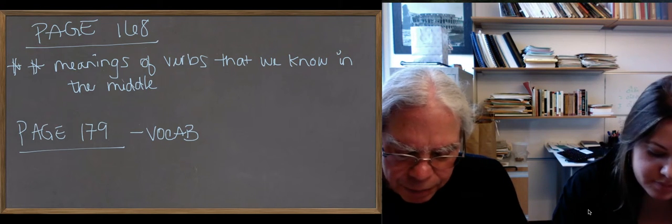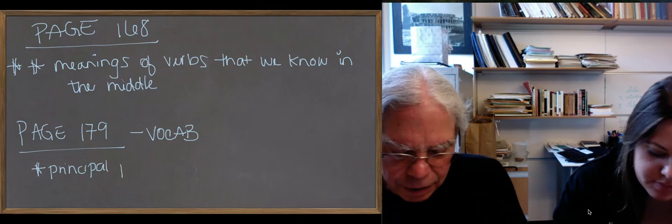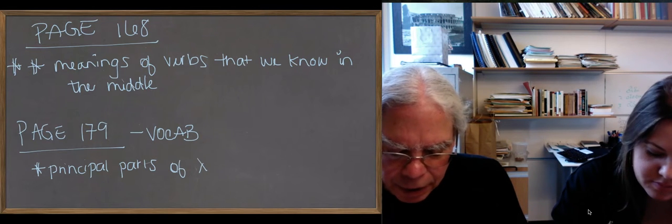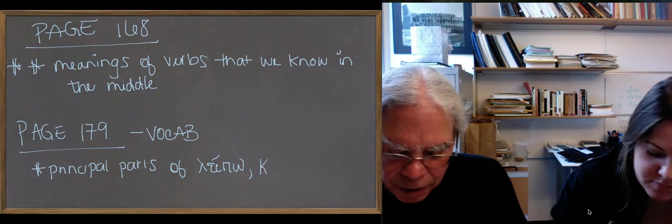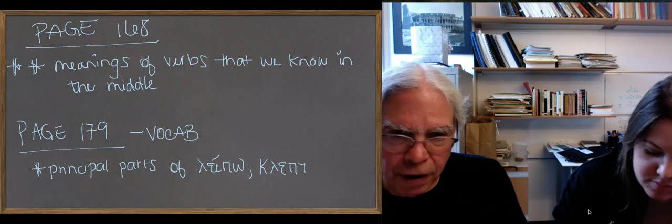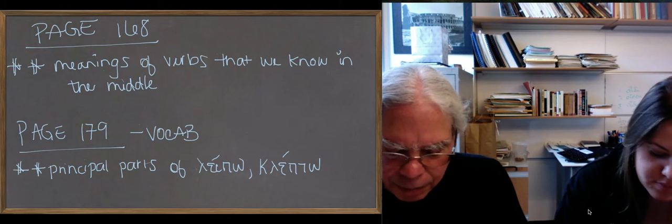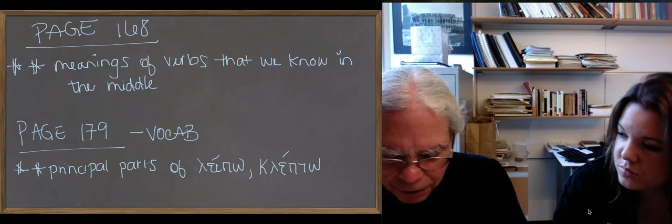The verb klepto also exhibits some of this behavior. Klepto to steal. It's klepto. The future is klepso. The stem is klep, K-L-E-P. So eklepsa is the aorist. Keklopha, here you go. You've got your o form of the root. Klep becomes klop. And then the p gets aspirated to a phi, to make your active perfect.